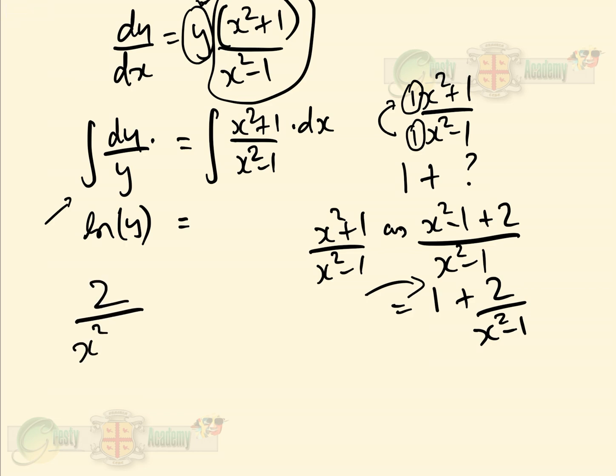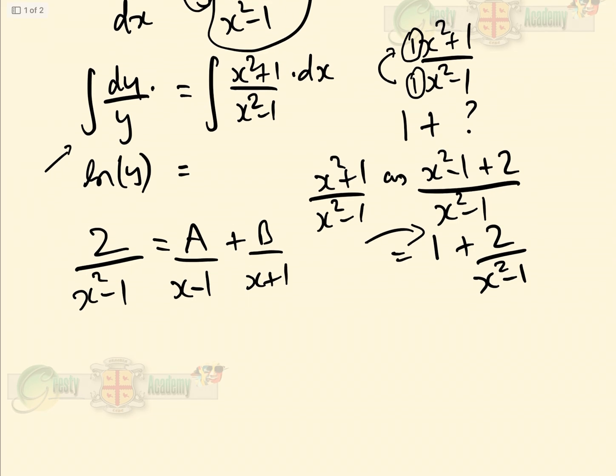Now, 2/(x² - 1) we have to do partial fractions. That equals A/(x - 1) + B/(x + 1).